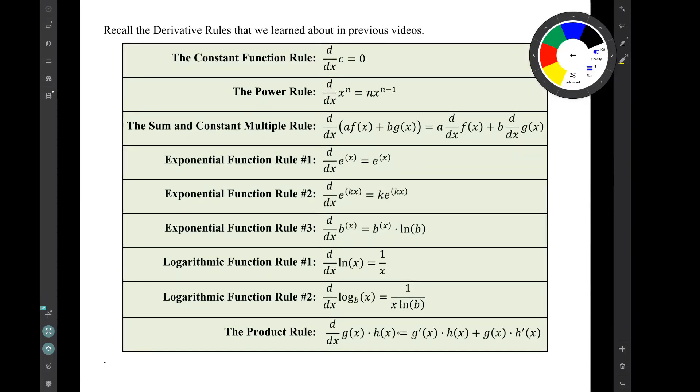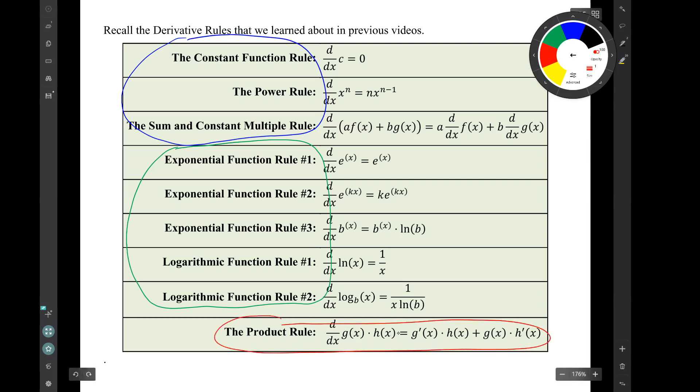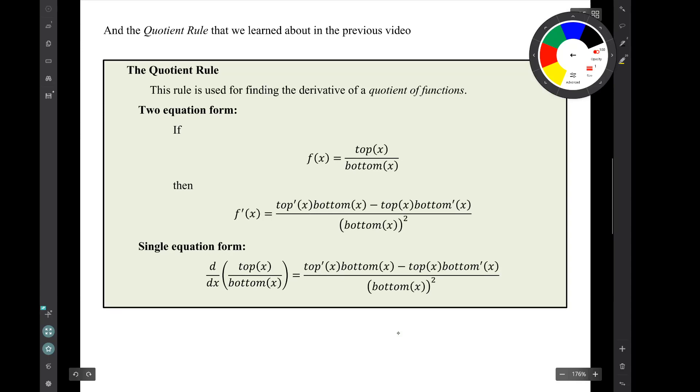So remember our derivative rules so far: the basic rules, constant function rule, power rule, sum and constant multiple rule. The rules involving derivatives of exponential functions and logarithmic functions that we learned in section 3.2. And then from earlier in this section 3.3, we learned the product rule. And then in the previous video, we learned the quotient rule, this ugly rule for finding the derivative of a quotient.